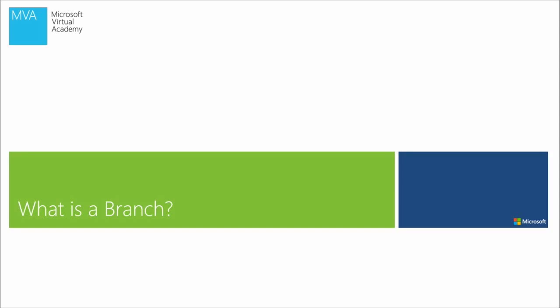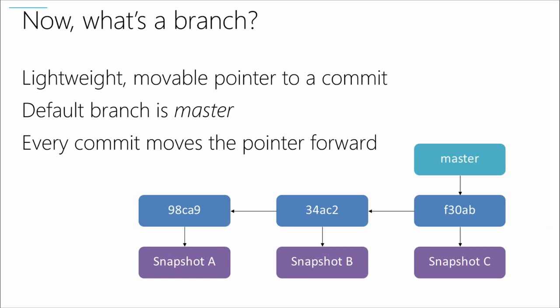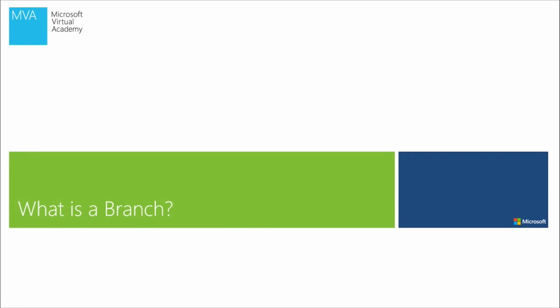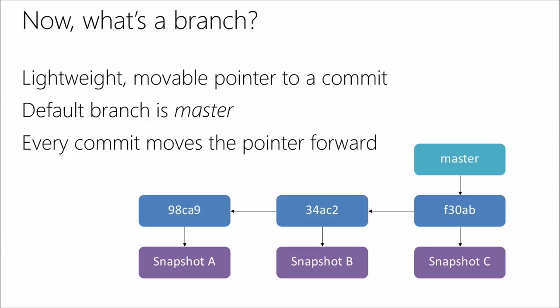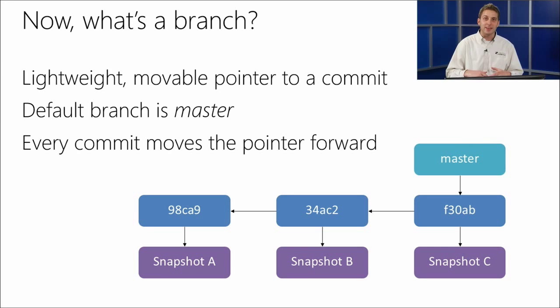So, what is a branch? When we think about a branch in Git, the thing to remember most is it's literally just a lightweight, movable pointer to a commit. If we look at the diagram on the slides, each one of those commits — 98C89, 34AC2 — those are the hashes for the commits, and they're all pointing to snapshots. Master is just pointing to a commit.